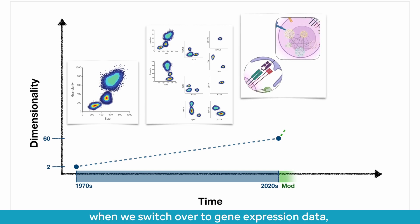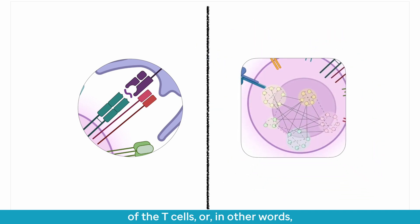But now, when we switch over to gene expression data, the dimensionality crosses into the thousands, as we simultaneously measure all genes expressed by the cells. This gave us a lot of finer details on T cell responses, but we still had an issue. For a long time, studies on TCR specificity, which asked whether a T cell can respond to a target, were done separately from those looking at the functional states of the T cells, or in other words, how the T cells responded.